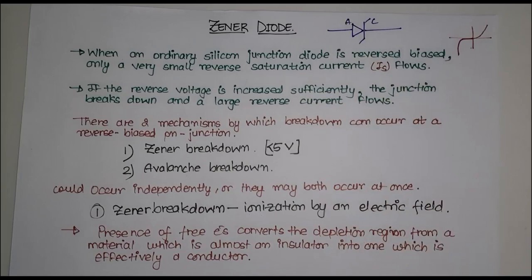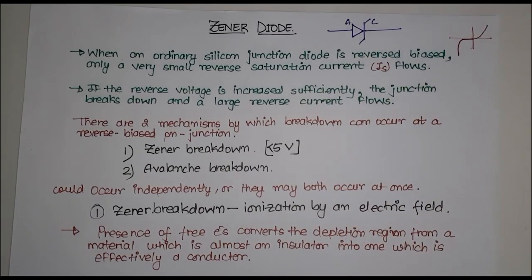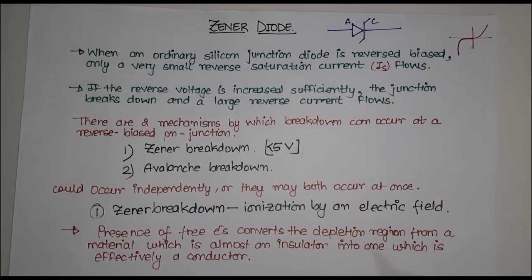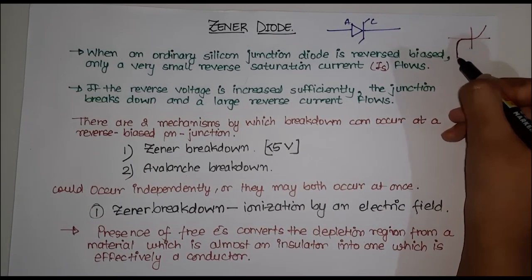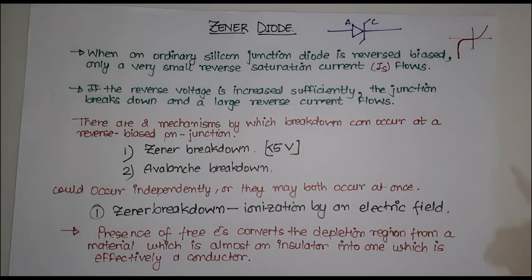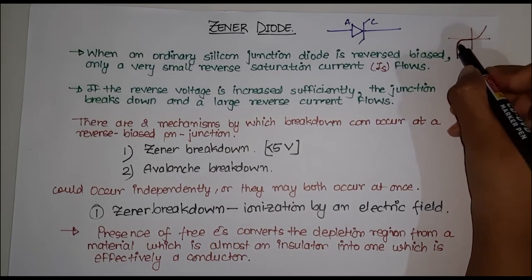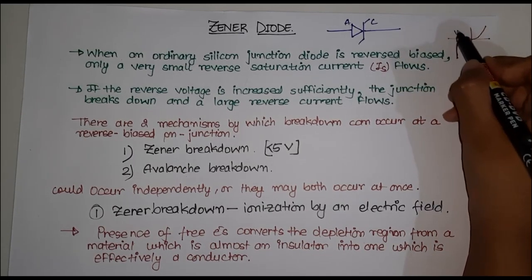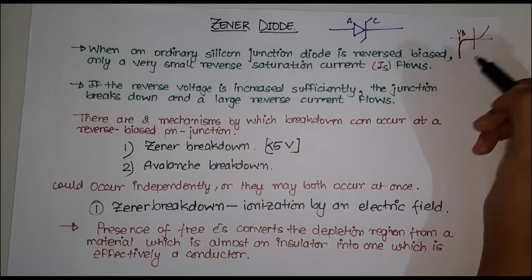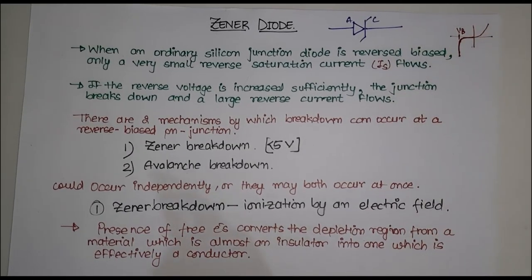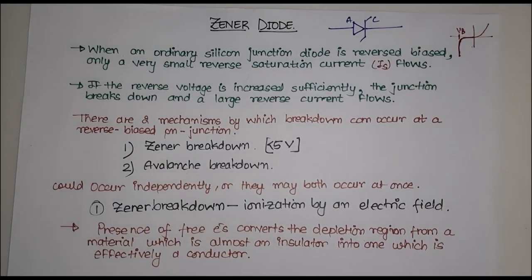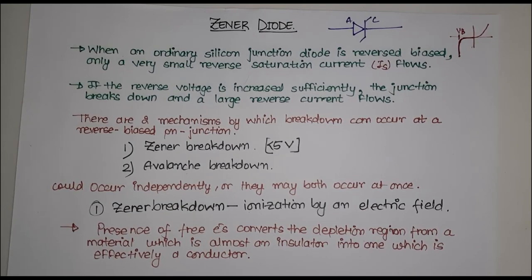Let's look at Zener breakdown. The current was very constant up till VB, and that was because of two reasons: Zener breakdown and avalanche breakdown. Zener breakdown is also called ionization by an electric field. Let us see why it is called so.